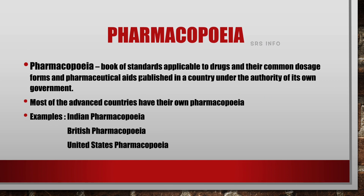Simply, we can say that Pharmacopoeia is the book of standards which is applicable to drugs and their common dosage forms and pharmaceutical aids, published in a country under the authority of its own government. This is an important fact — Pharmacopoeia is the book of standards applicable to drugs, their dosage forms and pharmaceutical aids.